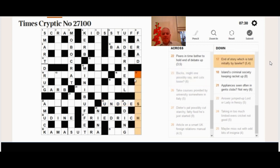23 across. Bucks might one possibly say and cuts loose. Bucks, the clue is suggesting, are the opposite of does. So they're undoes. That's in the sense of a buck being a male deer and a doe being a female. I think they apply to rabbits as well. Cuts loose, undoes.